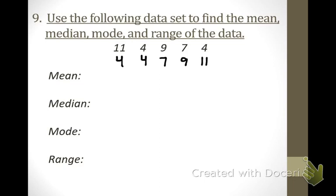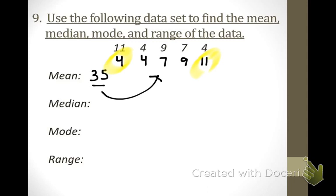Finding the mean — what does mean mean? Average. Add it up: you get 35. Remember, a lot of you just left it as 35, but an average should look about the same as the numbers in the data set. Does 35 look like the numbers in our set? It's way too big. The mean will always be between the smallest and largest number. So divide 35 by the number of numbers, which is 5. The answer is 7.